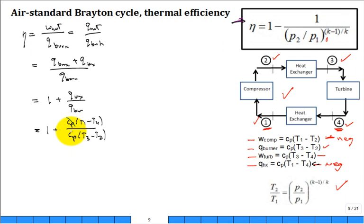So we can cancel our C sub P's. Now it's just a ratio of temperature differences. And because T1 is lower than T4, I'm going to bring that minus sign out and then switch the order.